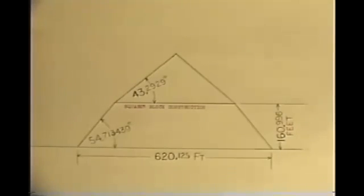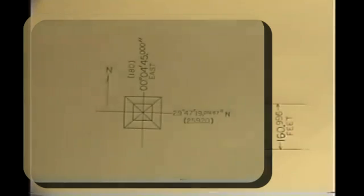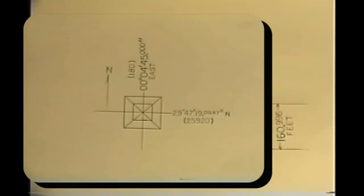We have even known the measurements of the Bent Pyramid for some time. But since we do not understand the language of the age, we can't read the figures. The height of the lower body, for example, 160.996 feet, is the square root of 25,920, which hits grid latitude.